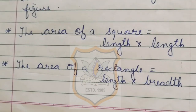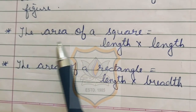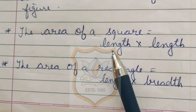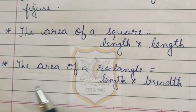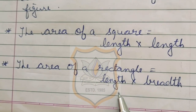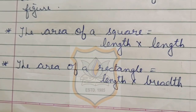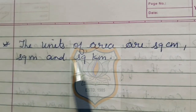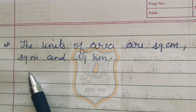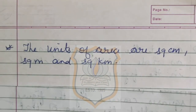Another way to find the area: for a square, the formula is length multiplied by length. And for a rectangle, to find the area we multiply length by breadth. The units of area are square centimeter, square meter, and square kilometer. With this we end today's video and will continue with our chapter in the next video. Thank you.